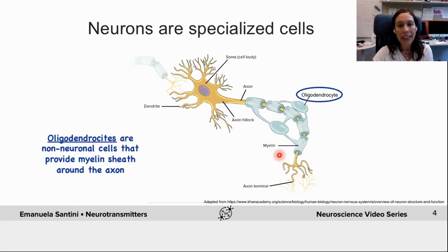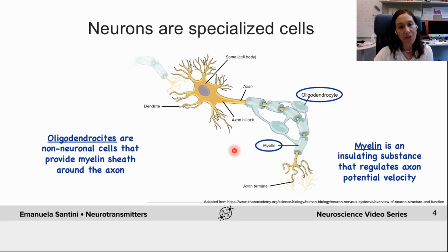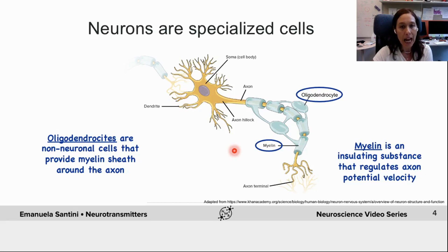Here are also depicted oligodendrocytes, which are non-neuronal cells of the central nervous system that provide myelin sheets around the axon. Myelin is a fatty substance that wraps around the axons providing myelin coating. The myelin coating is insulating and it regulates axon potential conduction velocity.